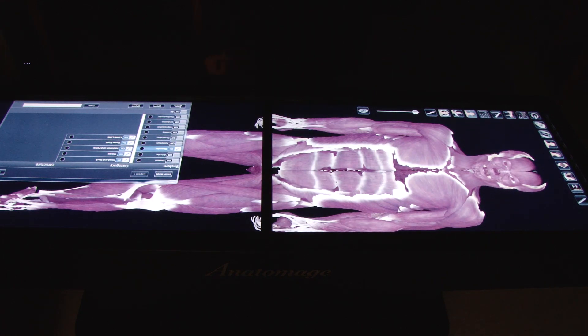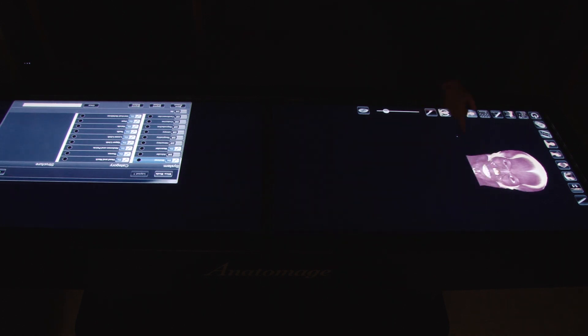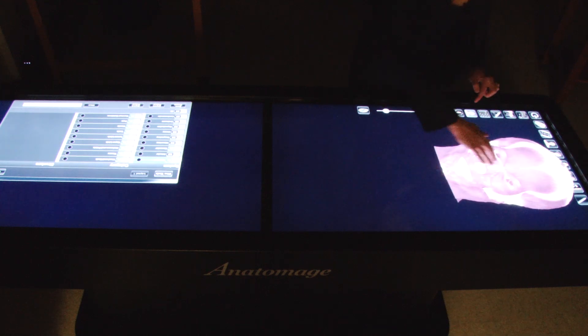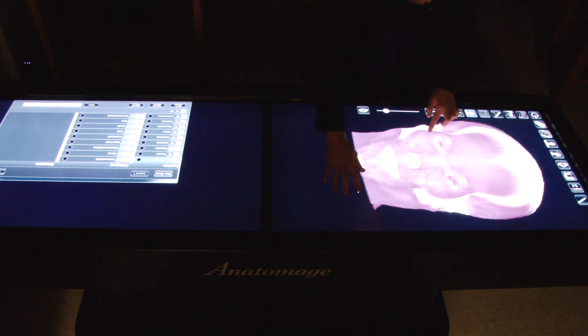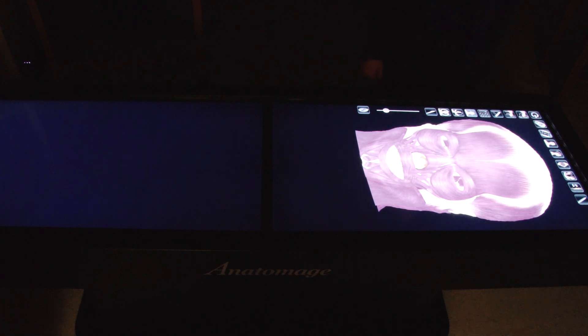Even a human cadaver does not allow students to do this type of study. In the Anatomage Table, students can isolate individual muscles or bones or structures. They can enlarge areas of the body in the high-res scans and see them very closely.